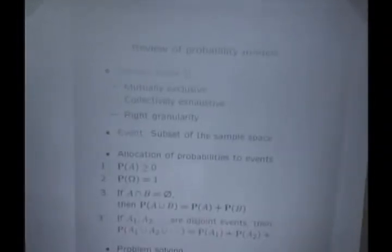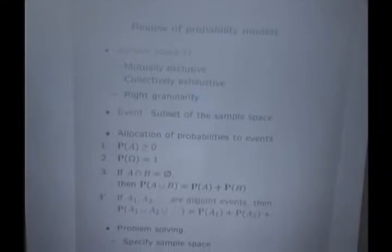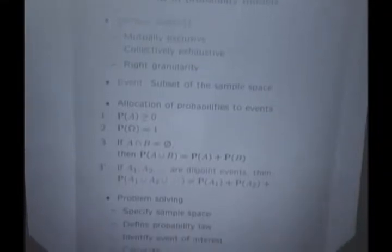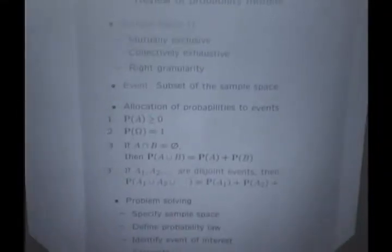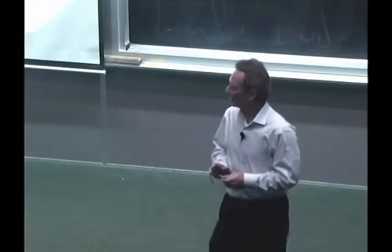It's a set, and the elements of the sample space are all the possible outcomes. Those possible outcomes must be distinguishable from each other. They're mutually exclusive. Either one happens or the other happens, but not both. And they're collectively exhaustive. That is, no matter what, the outcome of the experiment is going to be an element of the sample space. And then we discussed last time that there's also an element of an art in how to choose your sample space, depending on how much detail you want to capture.